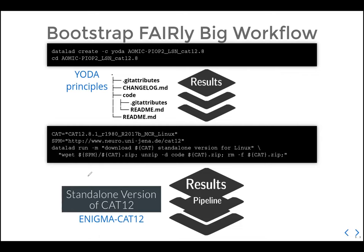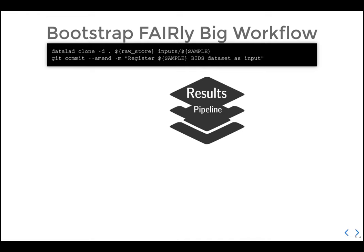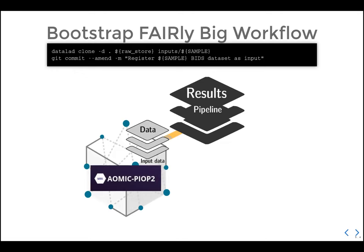In the lower half of the bootstrap script, we get the standalone version and copy it to our results dataset. The important thing is the 'datalad run' command, which downloads the standalone CAT/ENIGMA version from the internet, unzips it, removes the zip, and saves everything. The pipeline is then part of the results dataset — we can always see exactly what we did. Next, we use 'datalad clone' to attach the input data as a sub-dataset, using '-d .' to link it to our results dataset, without keeping all the data locally.